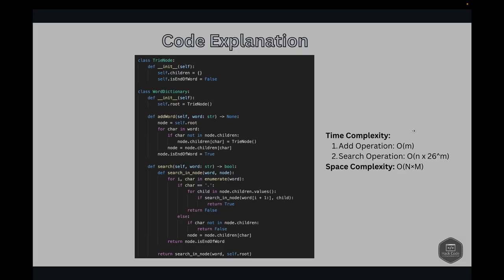At a high level, the TrieNode class initializes each node with a dictionary of children and a boolean flag to mark the end of the word. The WordDictionary class contains methods to add words and search for words. The addWord method iterates over each character in the word, creating nodes as needed, and marks the end of the word. The search method uses a recursive helper function to traverse the trie and find matches, then checks if the end of the word is reached.